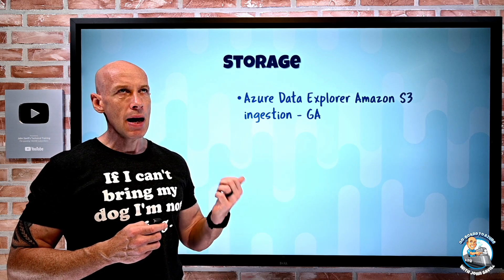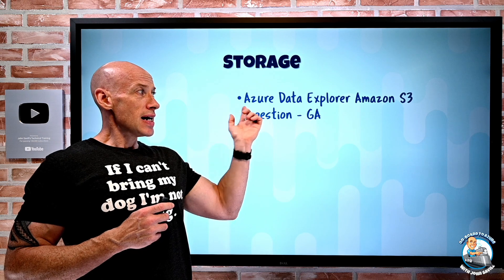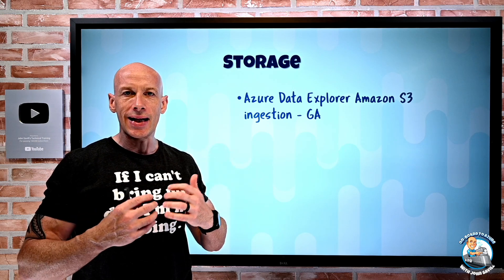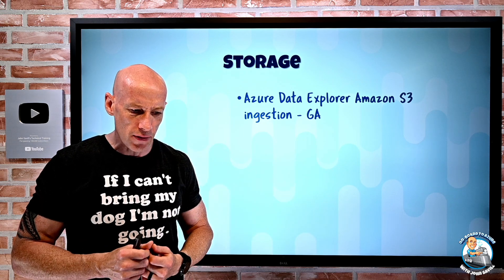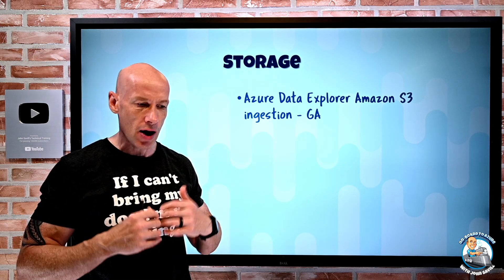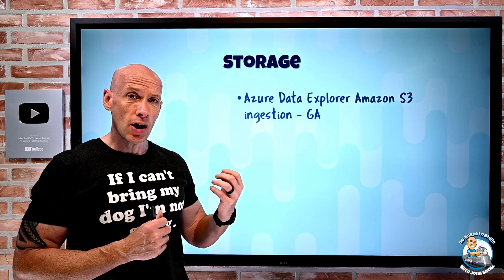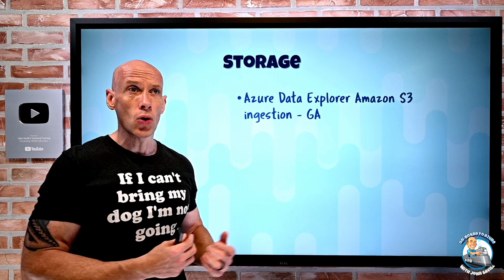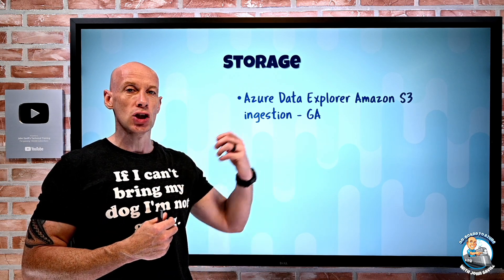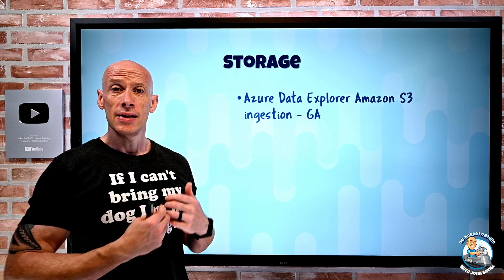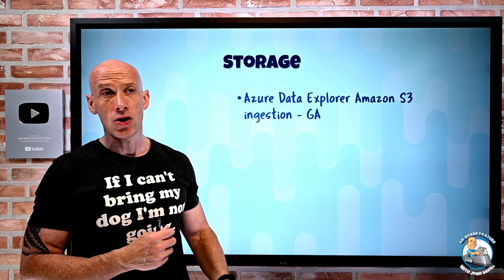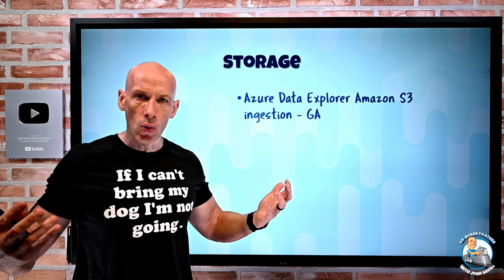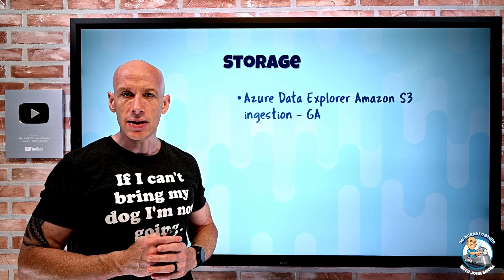On the storage side, Azure Data Explorer now has Amazon S3 ingestion. ADX is this huge data telemetry, log ingestion, and analytics service that can ingest from a huge range of sources — obviously Azure ones like Blob, Event Hub, and IoT Hub, but also things like Kafka. Now I can also directly ingest from an S3 bucket, so I don't need an extract-transform-load pipeline or orchestrator to get data from S3 into Azure Data Explorer. If my data is in an S3 bucket — maybe a data lake, an archive, whatever — I can now ingest it directly into ADX. I just need a credential for AWS to connect to it.